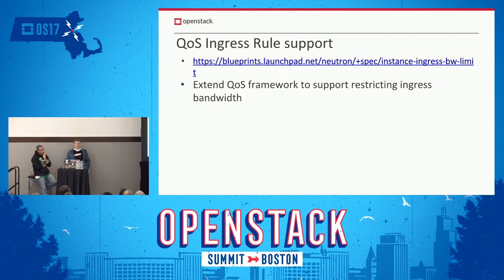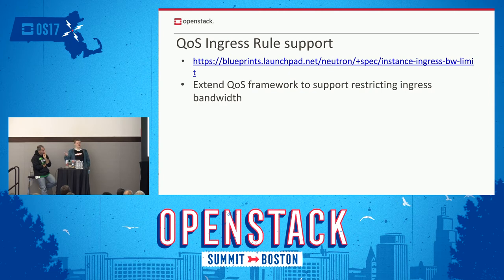QoS ingress rule support is pretty straightforward. The initial version of QoS only had limits on egress bandwidth — you could only limit traffic coming out of instances. This adds ingress support as well, so you can limit how much traffic can go into instances and do bi-directional limits.